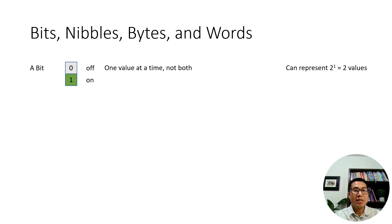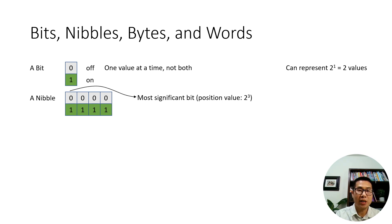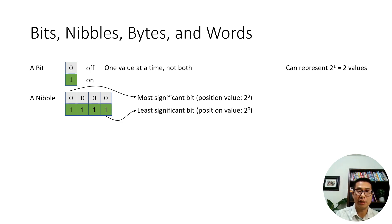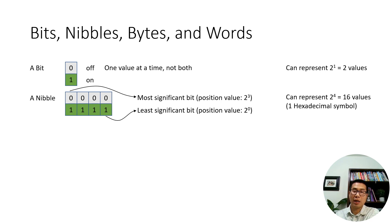The next unit is the nibble. A nibble consists of four bits. The first bit is called the most significant bit because it has the highest position value, which is 2 to the power of 3. The rightmost bit is the least significant bit because it has a position value of 2 to the power of 0. A nibble can represent 2 to the power of 4, or 16 values. It corresponds to one hexadecimal letter, with values going from zero up to 9, then A, B, C, D, E, and F for 10 up to 15.